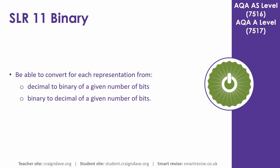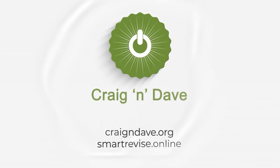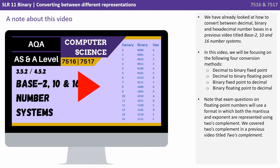In this video we look at being able to convert for each representation from decimal to binary for a given number of bits, and from binary to decimal for a given number of bits. We've already looked at how to convert between decimal, binary, and hex number bases in a previous video.